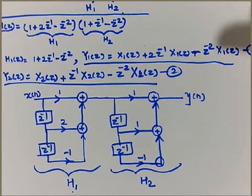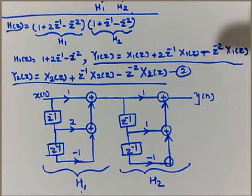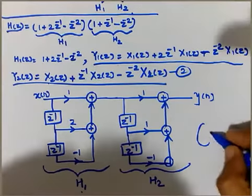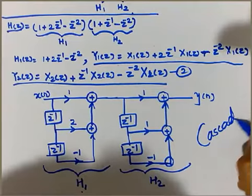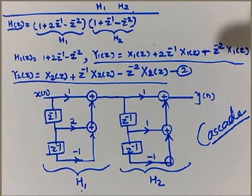This is how this is the representation for equation number 2, that is h2. This is the reflection of equation number 1, that is h1. This is how we can realize the given equation of h of z with the help of the cascade realization structure. This is the cascade realization for the given equation of FIR filter. Thank you everyone.